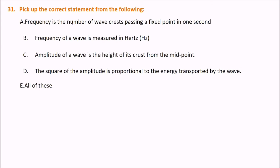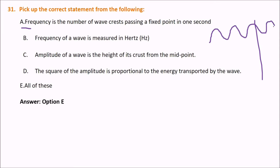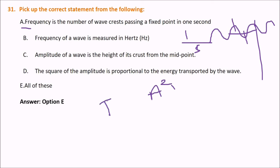Pick up the correct statement about wave, frequency, and amplitude. The answer is all of the above. Frequency is the number of wave crests passing a fixed point in one second, measured in hertz. Amplitude is the height of the crest or trough. The square of the amplitude is proportional to the energy transported by the wave, since intensity is directly proportional to amplitude and frequency.